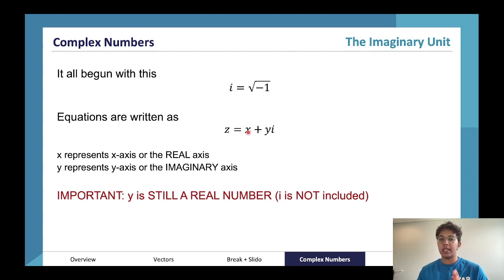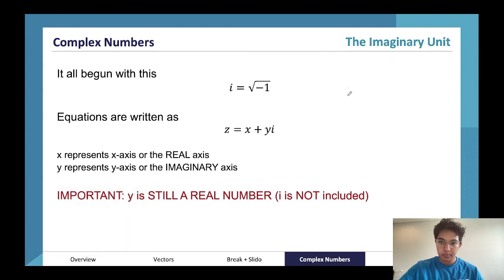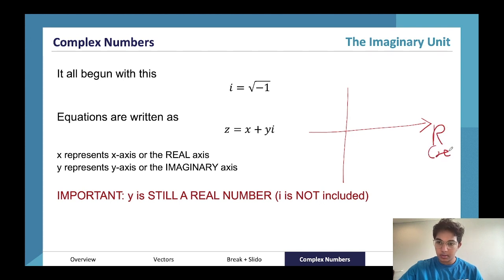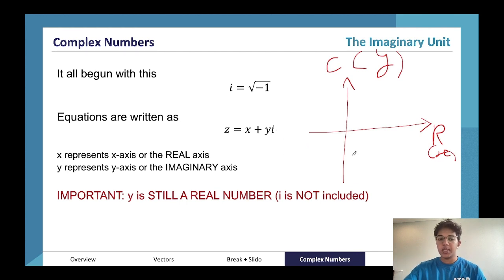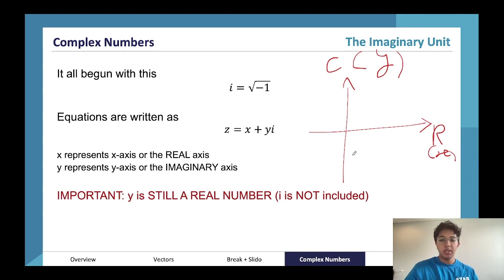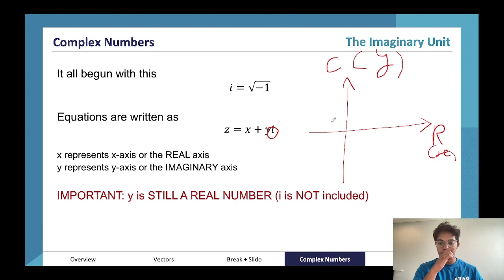The real axis is x, shown here on the complex plane. The complex axis is y. It's just an equation — y is still a real number, however it's being multiplied by i, which is why it's scaled on the complex plane.